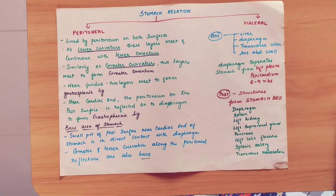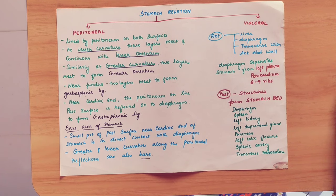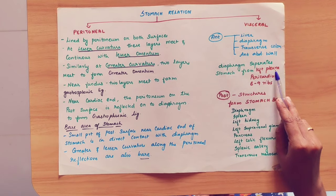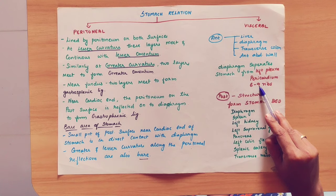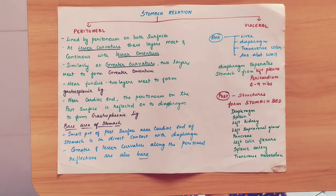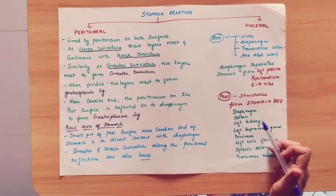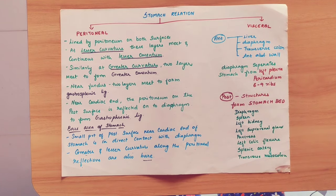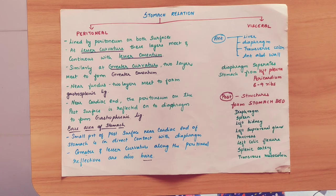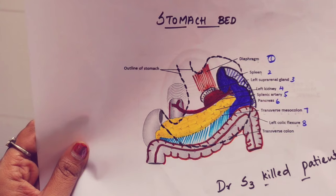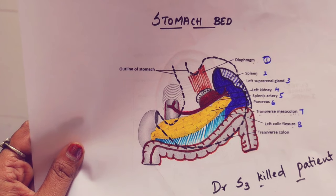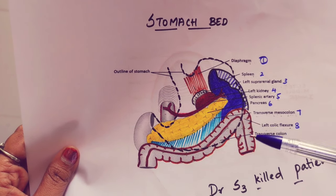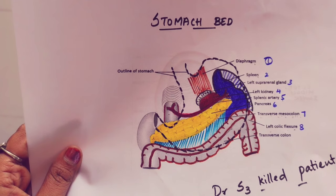The diaphragm separates the stomach from the left pleura, pericardium, and 6th to 9th ribs. Now, the posterior structures forming the stomach bed — if you look at the posterior surface of the stomach, we call that region the stomach bed. There are 8 structures that form the stomach bed.